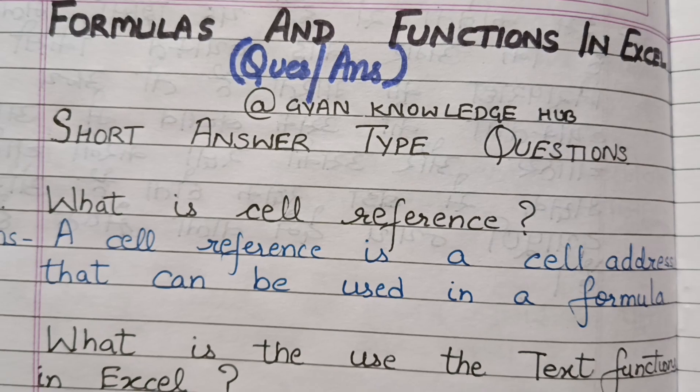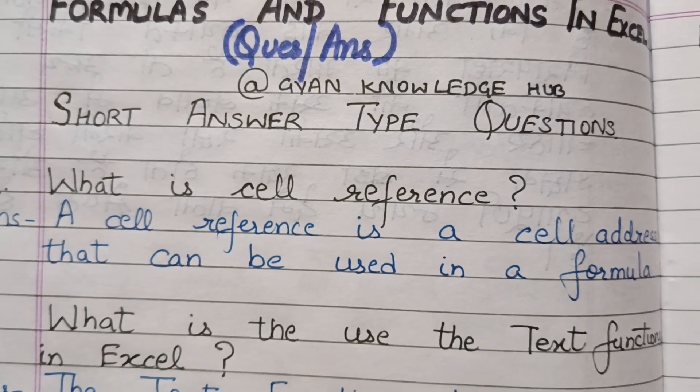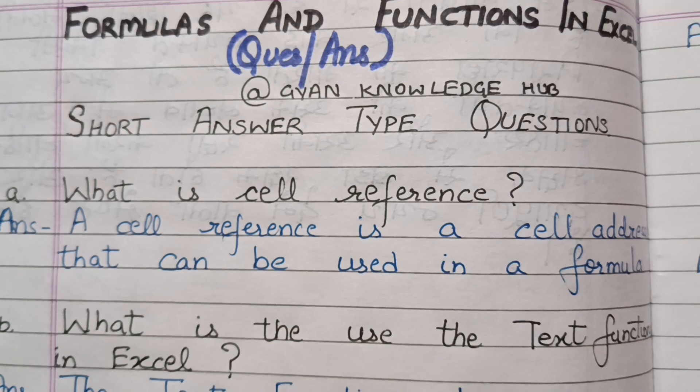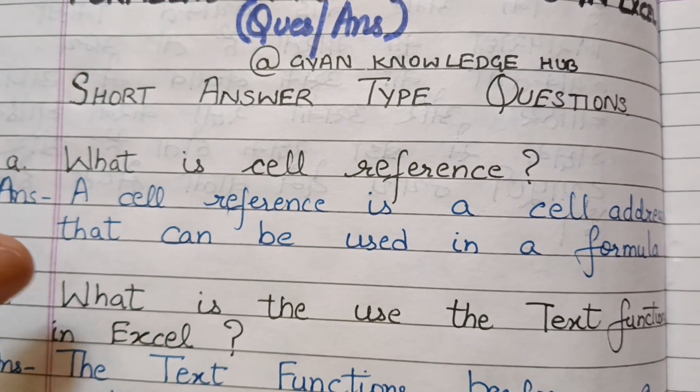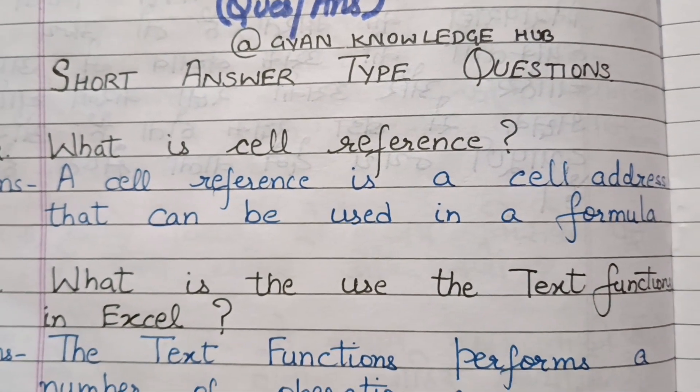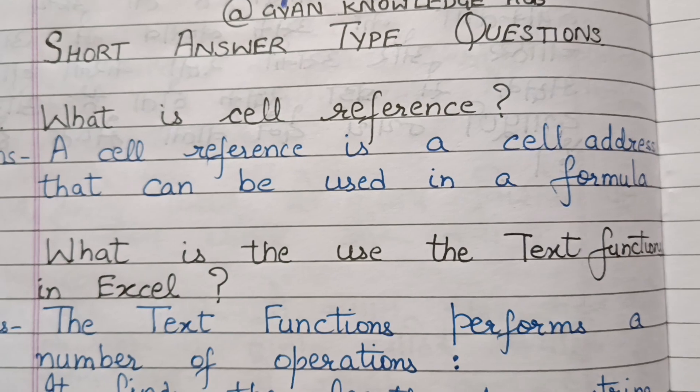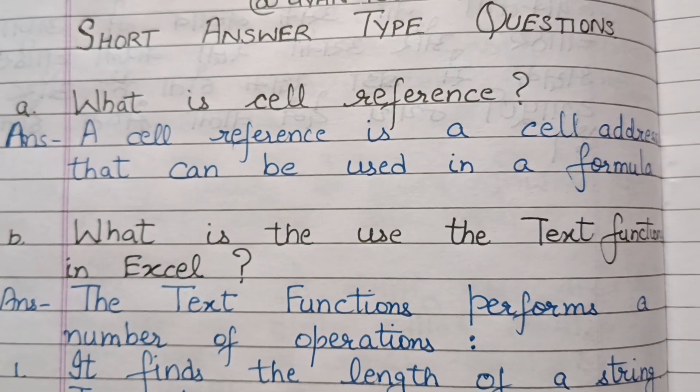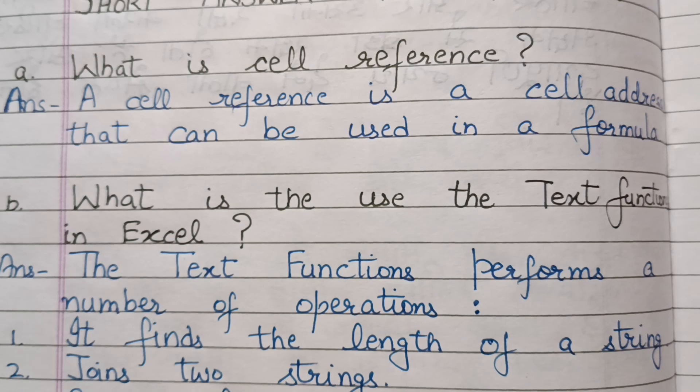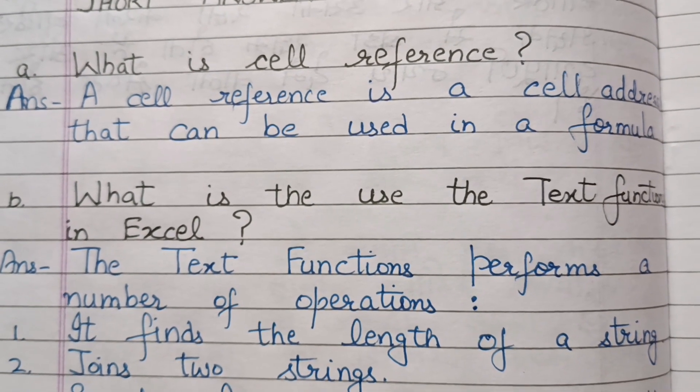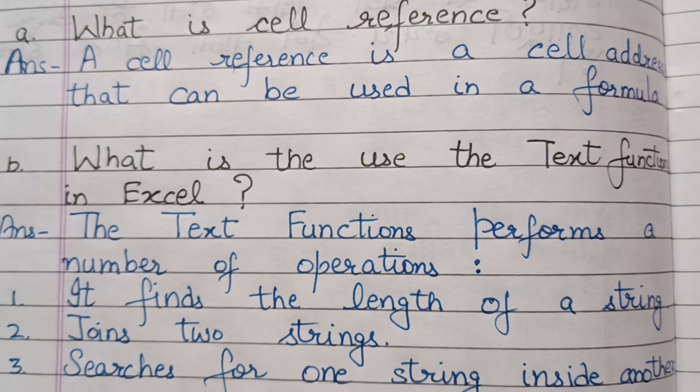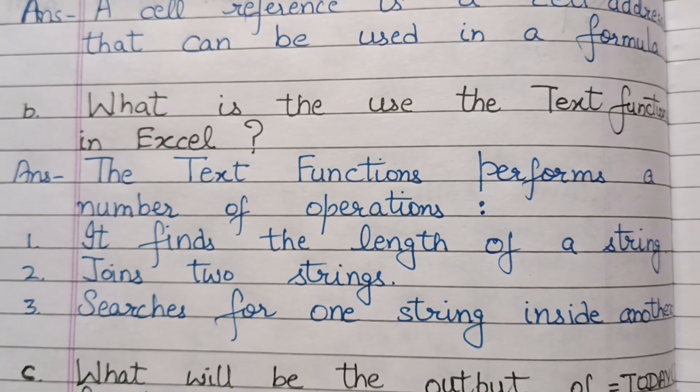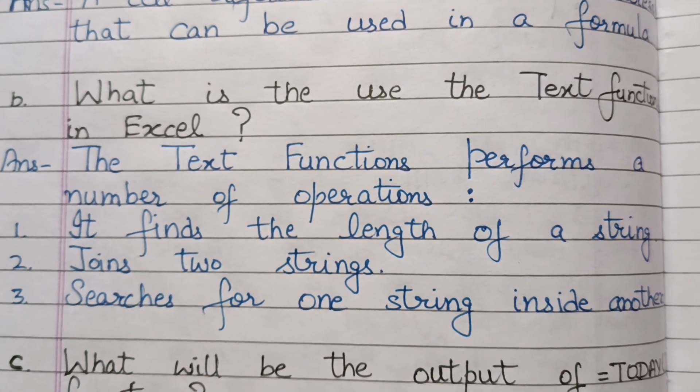What is the use of the text function in Excel? The text function performs a number of operations: Number one, it finds the length of a string. Number two, it joins two strings. Number three, it searches for one string inside another.